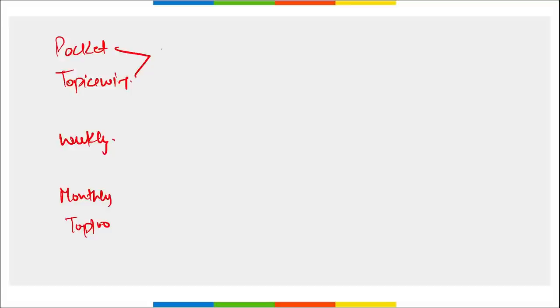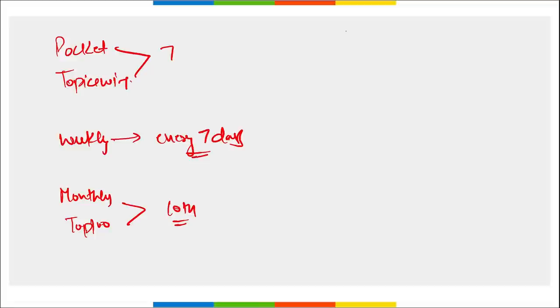Regarding our content: pocket-wise PDFs and topic-wise current affairs PDFs are released on the 7th of every month. Weekly current affairs are provided every 7 days. Monthly current affairs PDF and top 100 questions PDF are provided on or before the 10th of every month. We provide content in both English and Hindi.